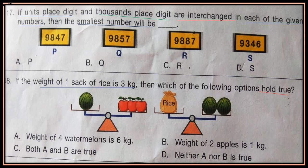Question 18: If the weight of one sack of rice is 3 kg, which of the following options holds true? See the figure — one watermelon equals 3 apples, and one rice bag of 3 kg equals 2 watermelons. Choose from the options: A) Weight of 4 watermelons is 6 kg, B) Weight of 2 apples is 1 kg, C) Both A and B are true, D) Neither A nor B is true.